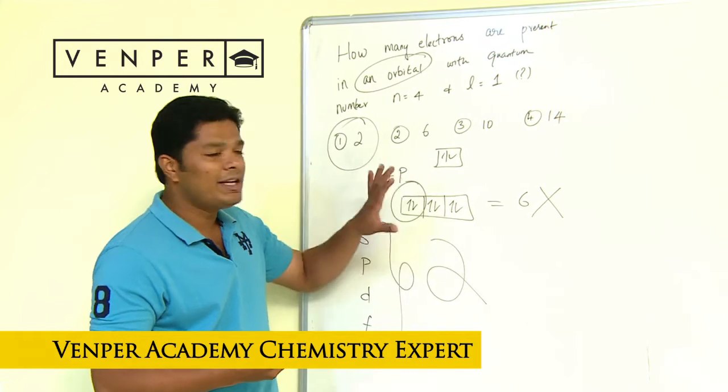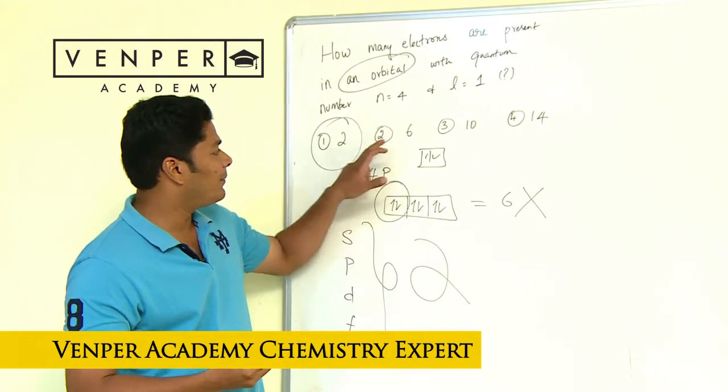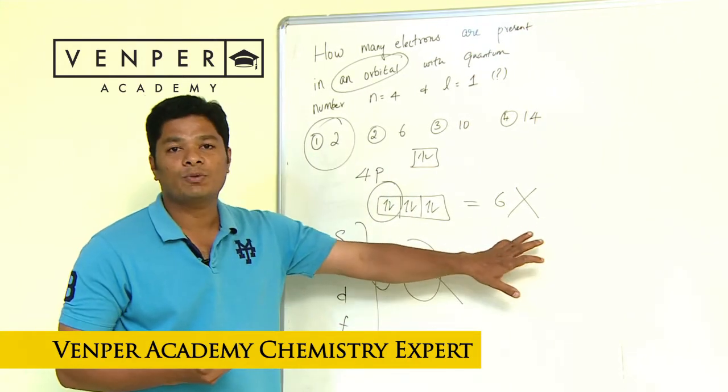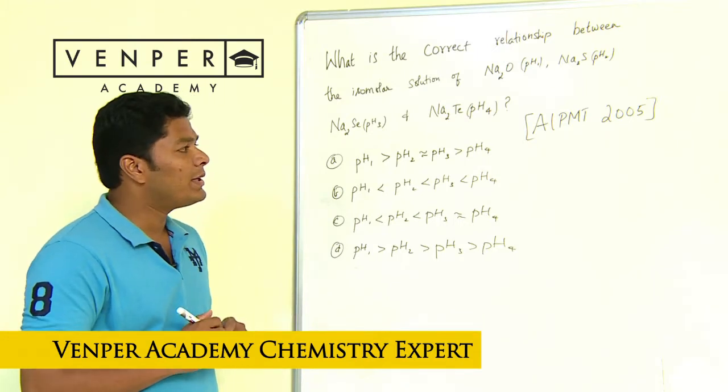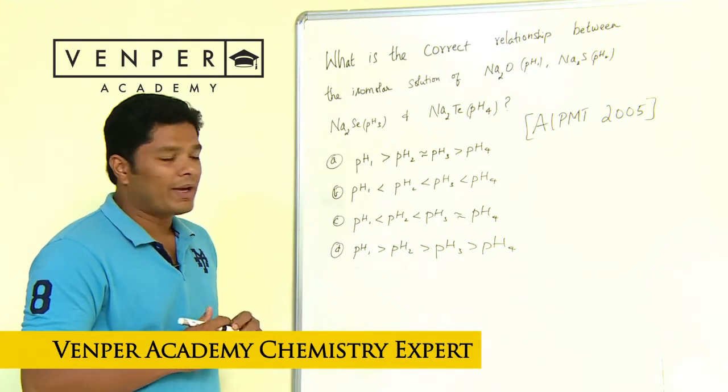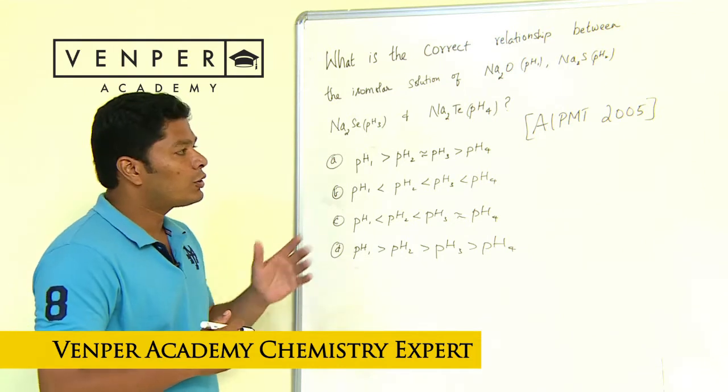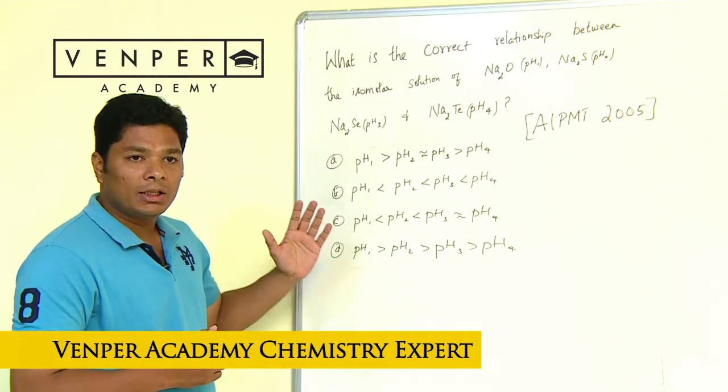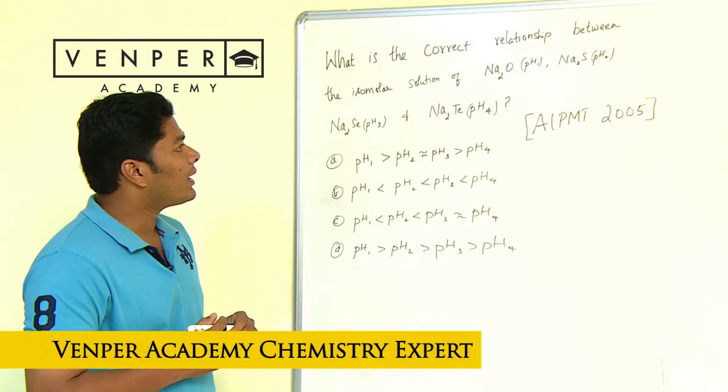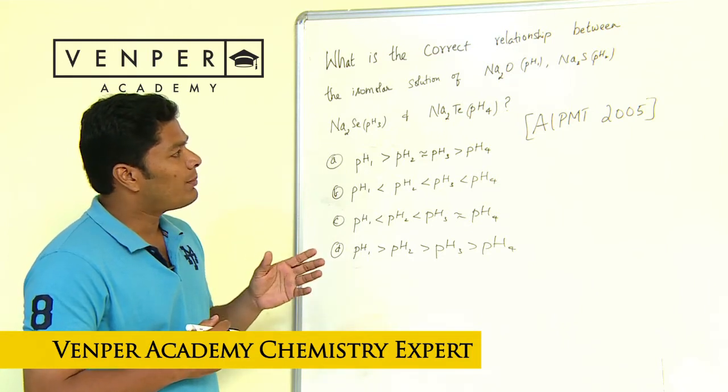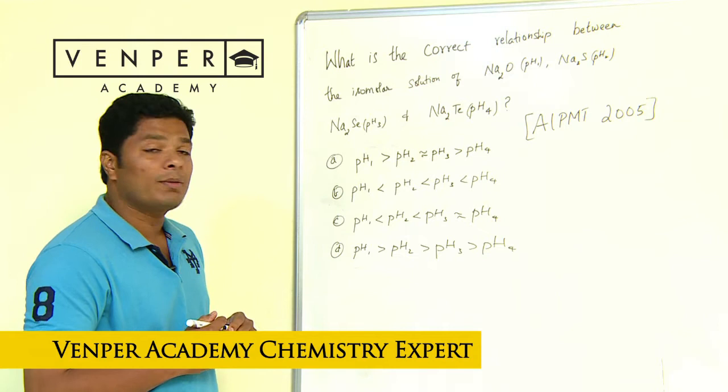Let's see one more question. This is actually an AIPMT 2005 - AIPMT is NEET right now - 2005 question. When you look at the question, it's asked for what is the correct relationship between the isomolar solution of sodium oxide, sodium sulfide, sodium selenide, and sodium telluride pH. What a comparison.